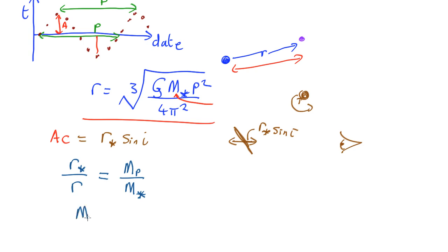So that means the mass of the planet equals the mass of the neutron star times r_star over r, and we can get r_star from this equation. So what we find out is that the mass of the planet equals mass of the star, r_star over r, and that r_star is A·c over sin i.